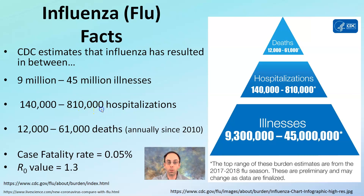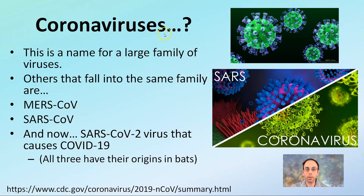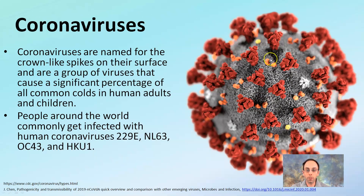Now let's take a better look at coronavirus. There are coronaviruses — with an S — because it's not just one type of virus; it's named for a family of viruses. MERS, SARS, and the novel coronavirus all fall into this same category. All three originate in bats, which is interesting. The coronavirus is named for the crown-like spikes on its surface, and it's a group of viruses that cause a significant percentage of all common colds in human adults and children around the world.